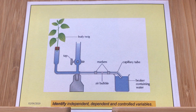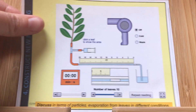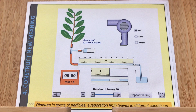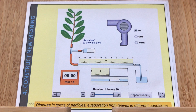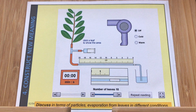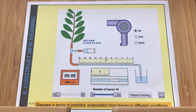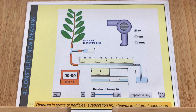Here's the computer model we used — we could turn the hairdryer off, cold, or warm, change the number of leaves, leave it for a fixed period of time, and see how much the air bubble has moved. That tells us how much water has been lost from the leaf.